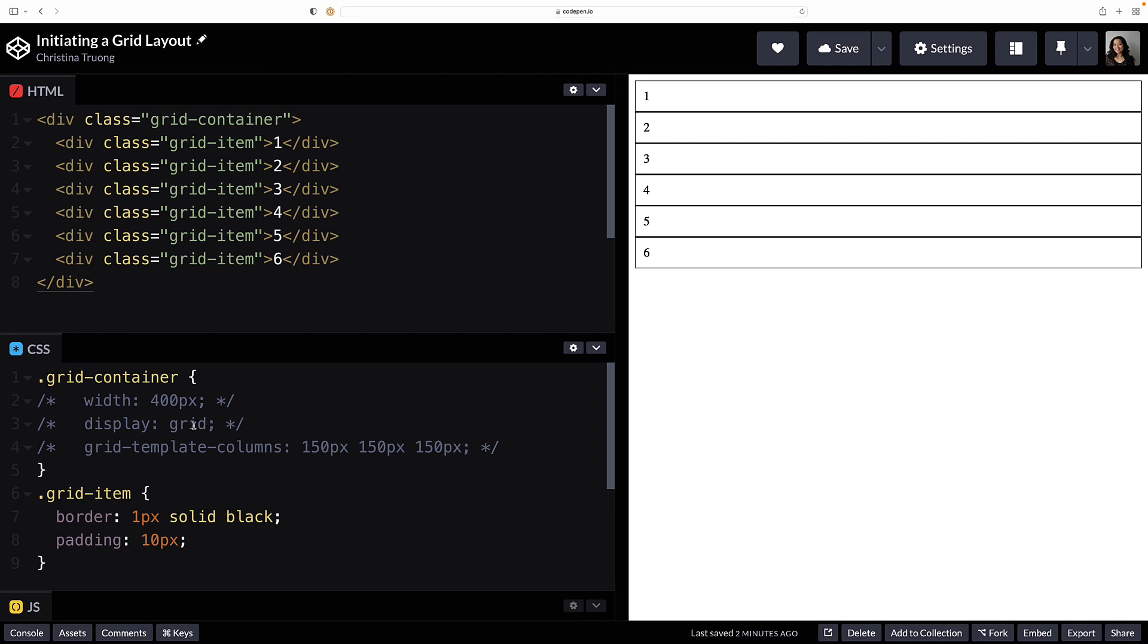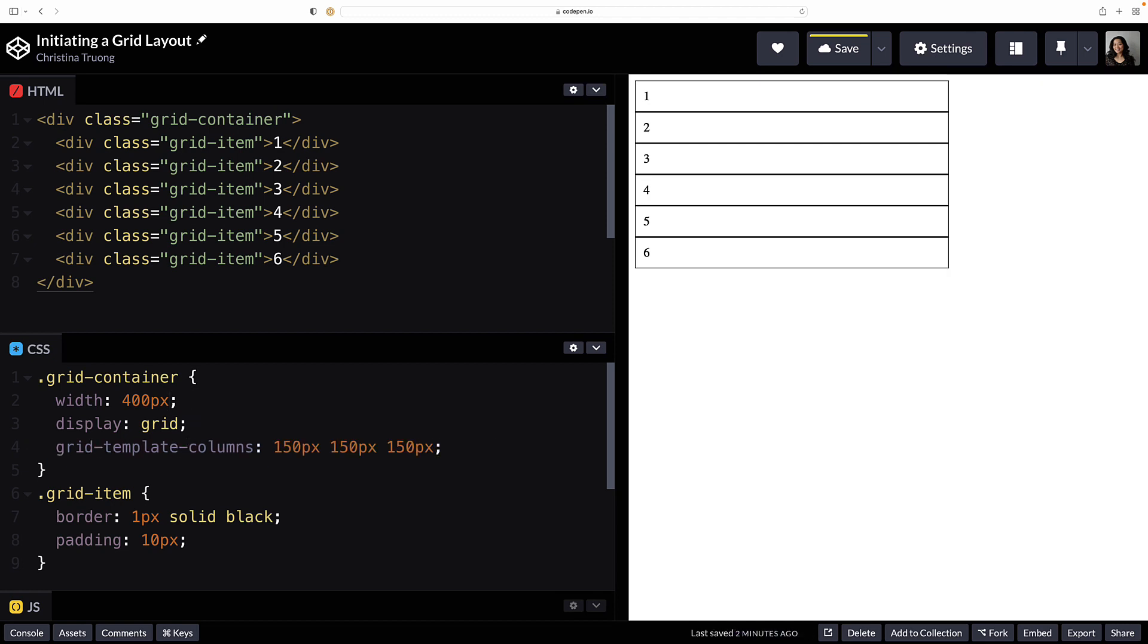The grid value will display the grid items to equal the width of its container, so you may not actually see any changes until other grid properties are added to define the size of the columns or rows.